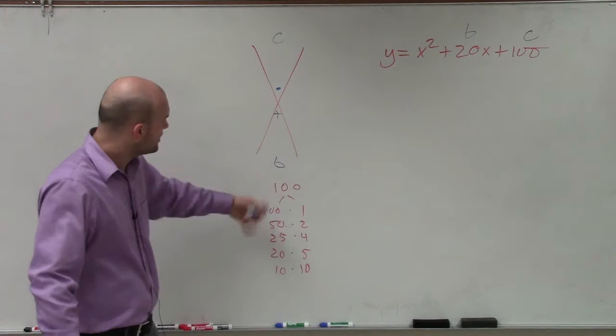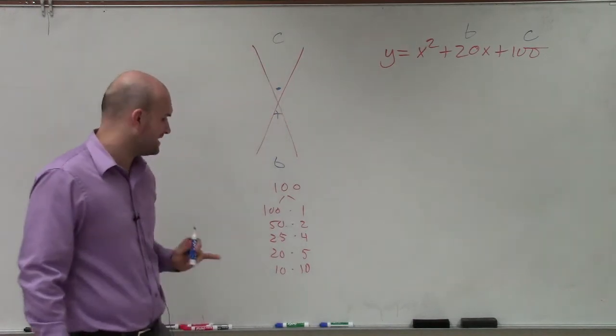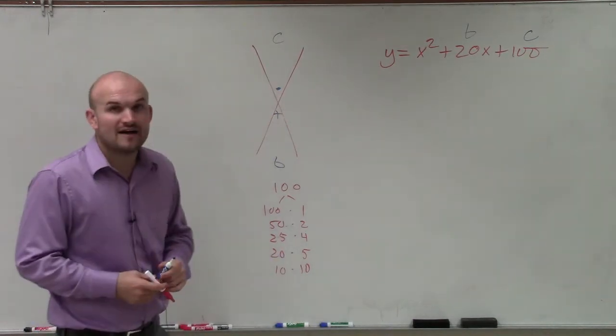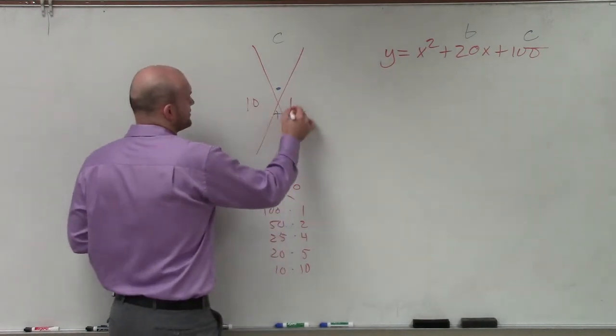So I look at these factors and see, all right, out of those factors of 100, what two numbers multiply to give me c, but then add to give me b. And you can see that my two factors are going to be 10 and 10. So I write those right there.